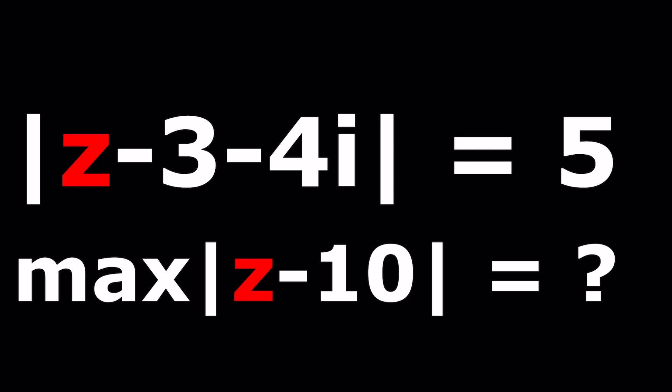We have the absolute value of Z minus 3 minus 4i equals 5, and for the Z values that satisfy this, we're going to find the maximum value of the absolute value of Z minus 10. We're going to use a couple of different things here.